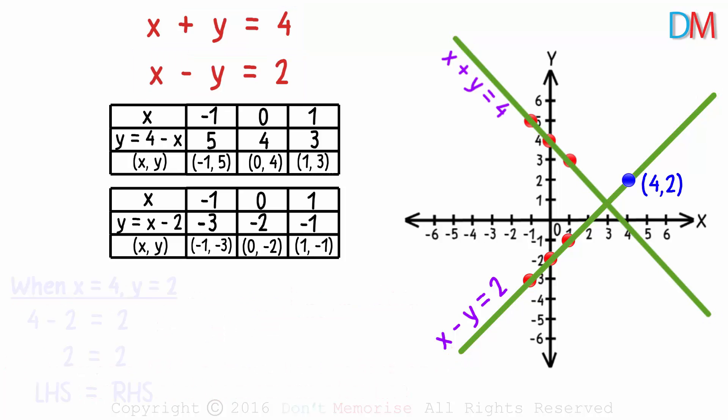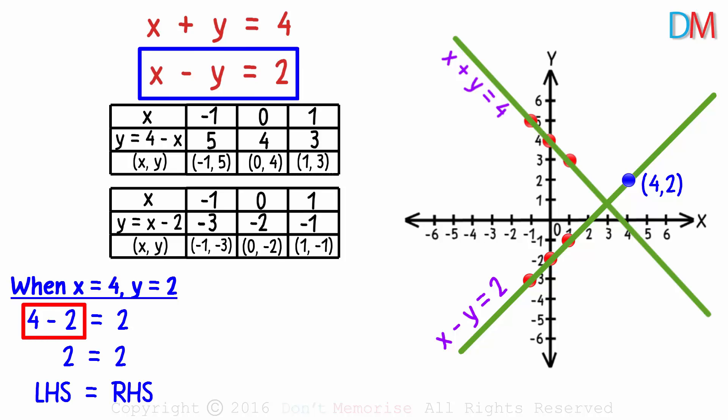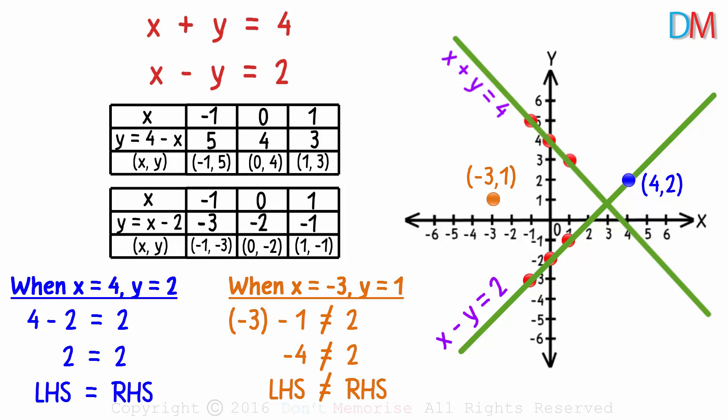For instance, 4,2 will be a solution for the equation x minus y equals 2. 4 minus 2 is 2. And what about the points that lie on neither of the lines? Easy! They will not be the solutions for either of them.